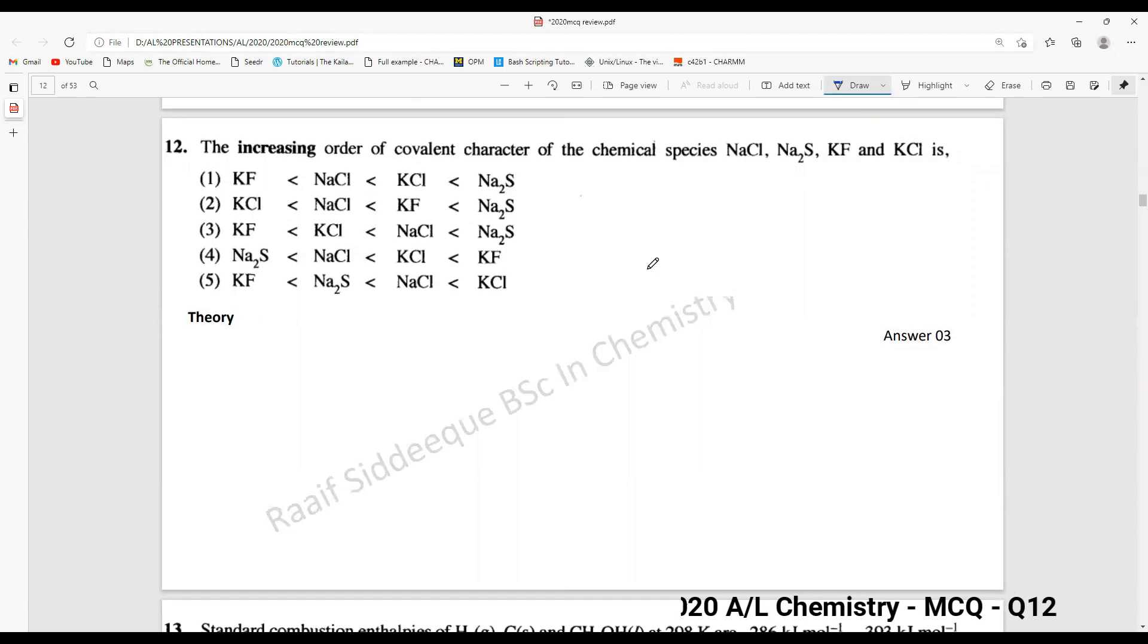Question 12 is about the increasing order of covalent character, which is very straightforward. What you need to know are the electronegativity values. I've told you this many times over the years, from 2011 to 2019, and this is a 2020 paper, the final one. Just try to remember a few electronegativity values for the s and p block elements, then it will be very easy.